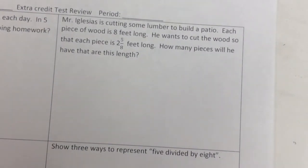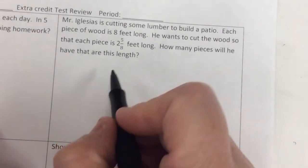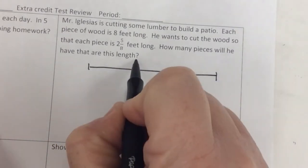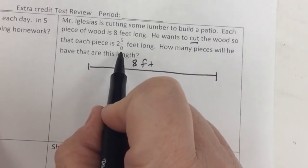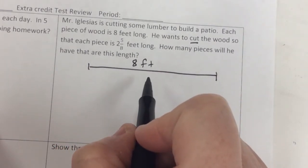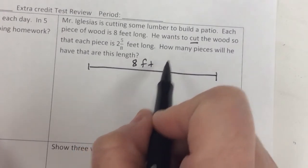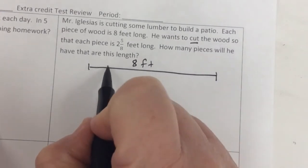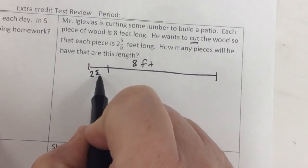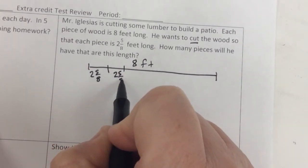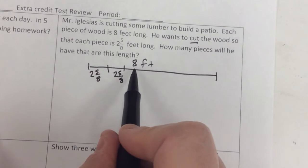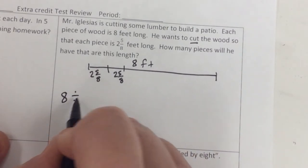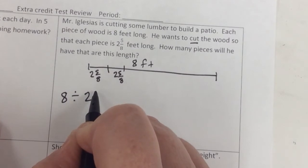Mr. Iglesias is cutting some lumber to build a patio. And each piece of wood is 8 feet long. So let's say this is my board here and it's 8 feet long. He wants to cut the wood so that each piece is 2 and 5/8 feet long. That means I'm breaking it or cutting it into equal smaller parts. That tells me it's division. How many pieces? So it's saying, 2 and 5/8. 2 and 5/8. If I could do that over and over, how many of those would I have? That means it's division. So remember, the first number is my total amount to be shared. The second number is how I'm grouping it. And each group is 2 and 5/8 feet long.